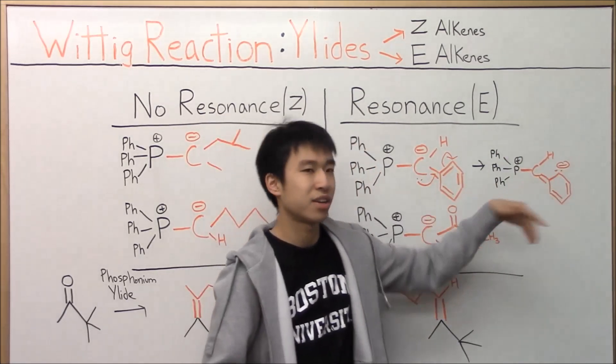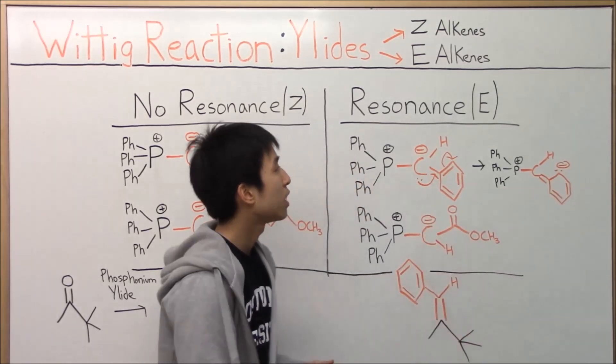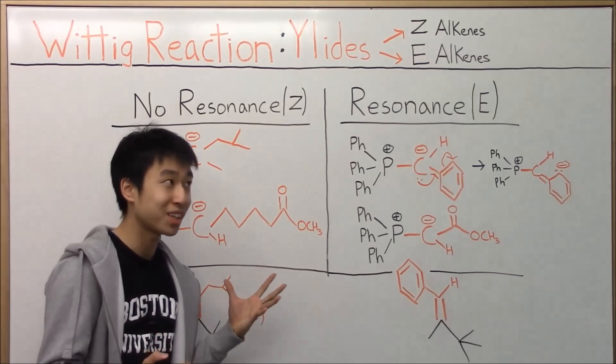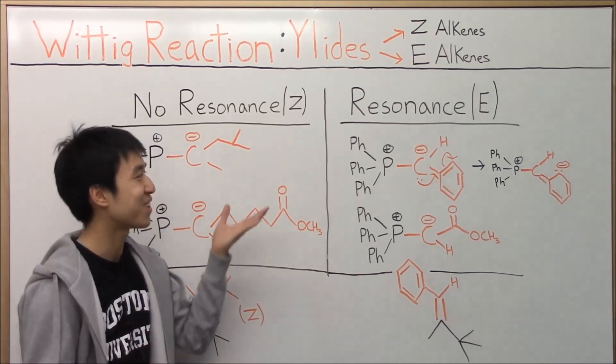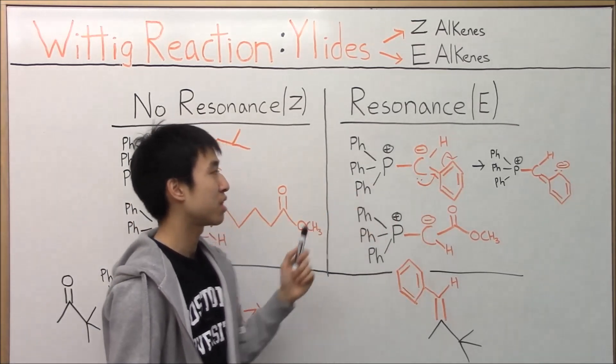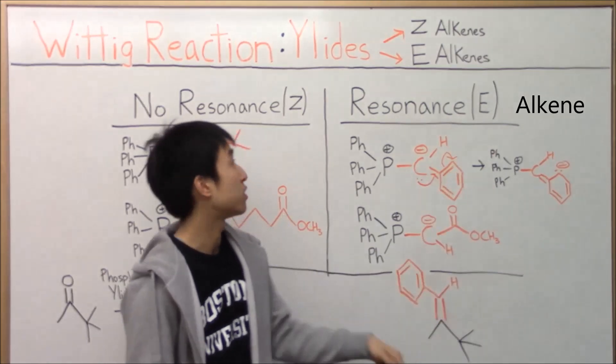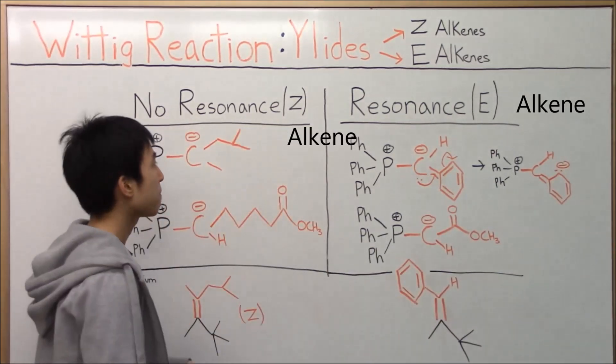That's why the two electrons in the bond are now here, giving that carbon a negative charge. And this can keep spinning around in the ring multiple times, so that provides stability and stabilization to our ylid over here. And that's why when you react this ylid with ketones or aldehydes, you'll form an E-alkene versus a Z-alkene. Alright?